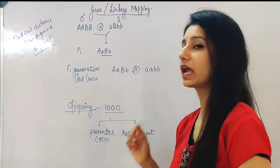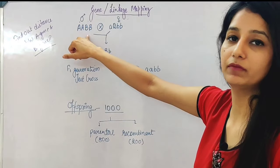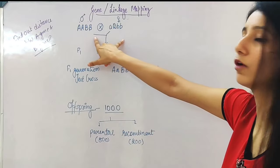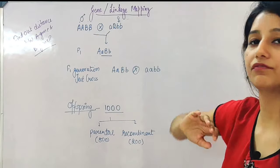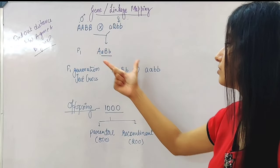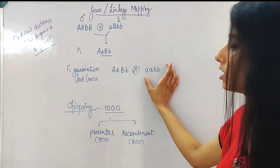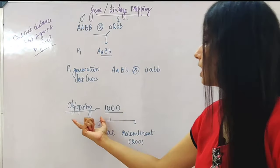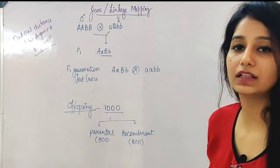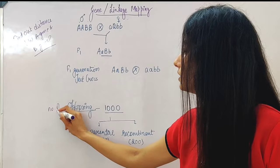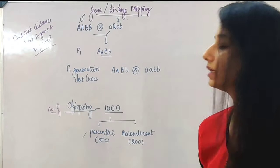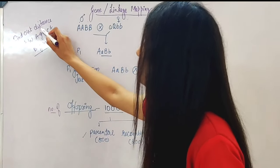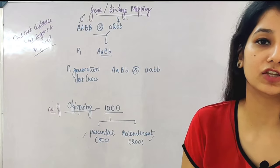Let's apply this to a question. Two parents — one father, one mother — when fertilized give an F1 generation. The F1 generation is then test-crossed. The total number of offspring from the test cross is 1000: 800 parental offspring and 200 recombinant offspring. We need to find the distance between gene A and gene B.